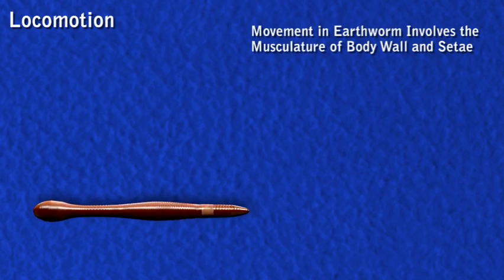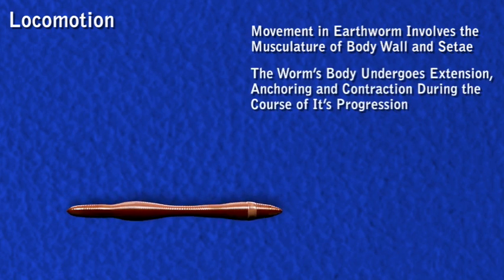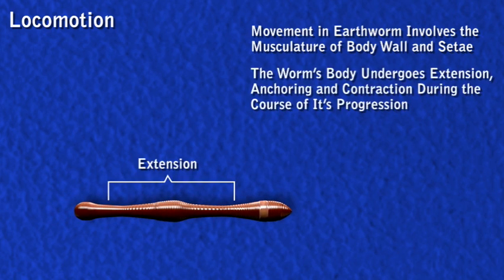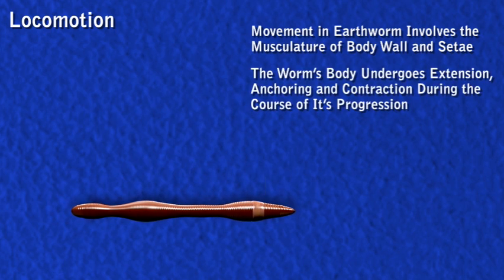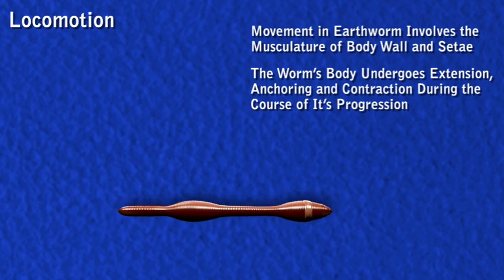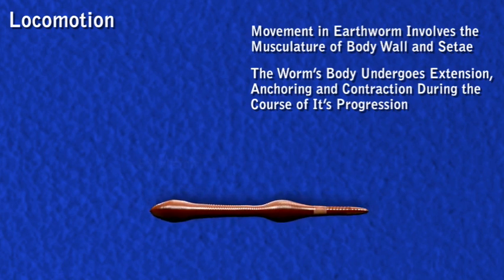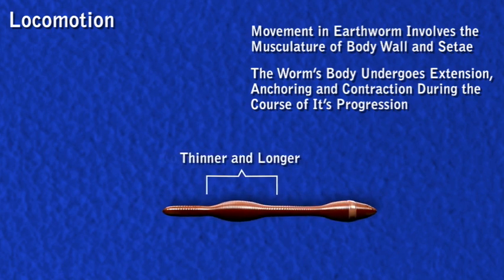Movement in earthworm involves the musculature of the body wall and setae. The worm's body undergoes extension, anchoring, and contraction during the course of its progression. A wave of contraction affecting circular muscles begins at the anterior end and travels posteriorly, causing the body to become thinner and longer.